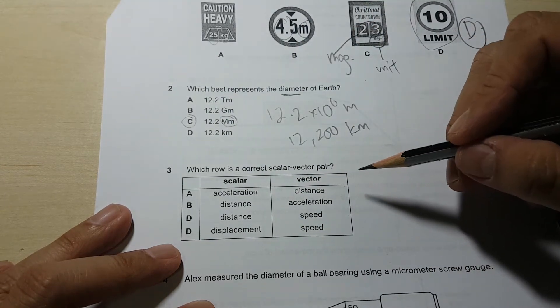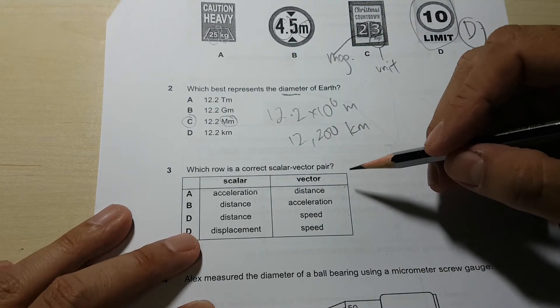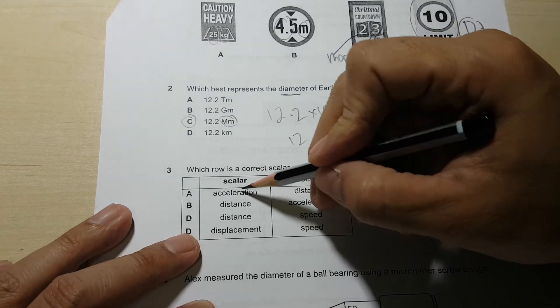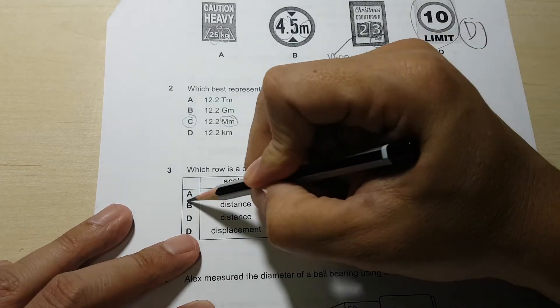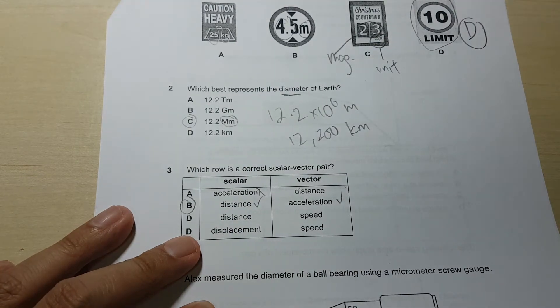Which row is the correct scalar vector pair? In this case, you can see this one is vector, so nope. Scalar vector, so answer will be B for this case.